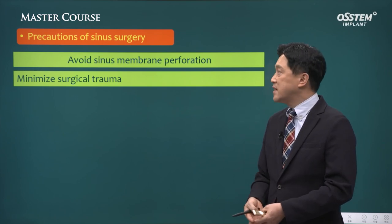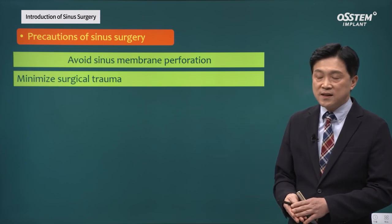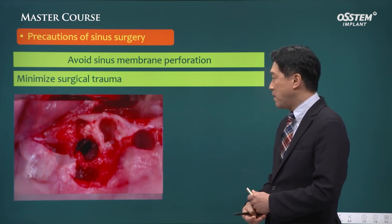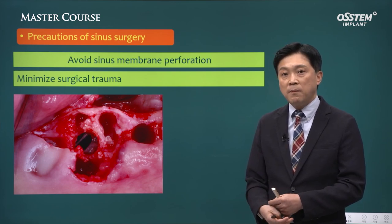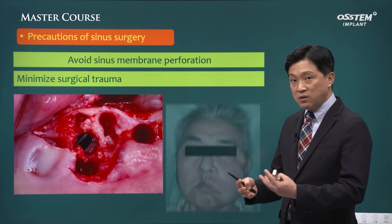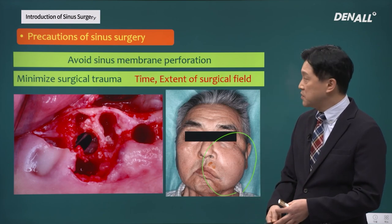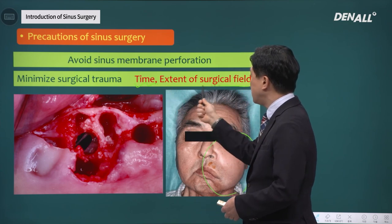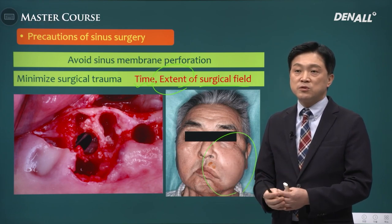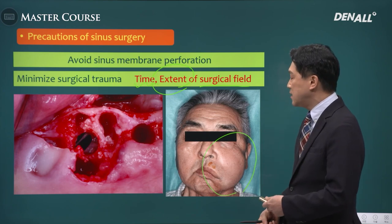When we do sinus surgery, there are many precautions to take. The first precaution is to avoid sinus membrane perforation. Second, we need to minimize surgical trauma — that is very important. When there is membrane perforation, it can be baffling. In order to manage membrane perforation, additional techniques may be necessary, the extent of surgery may become increased, and postoperative swelling can be experienced by the patient. The surgical time can be extended as well as the surgical field. Extended surgical time and surgical field can increase the possibility of post-op side effects, and we need to take measures to prevent these.